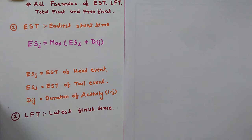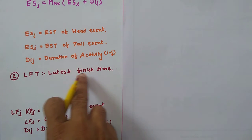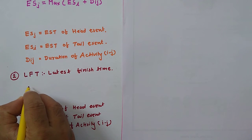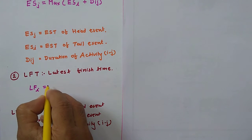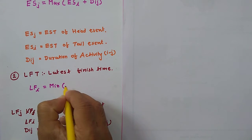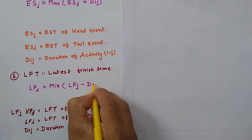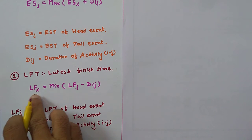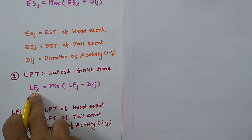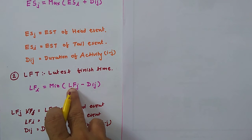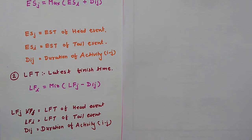The second formula is Latest Finish Time, LFT. Latest Finish Time is: LFI is equal to the minimum of LFJ minus DIJ. Here LFI is the latest finish time of the tail event, LFJ is the latest finish time of the head event, and DIJ is the duration of that activity.